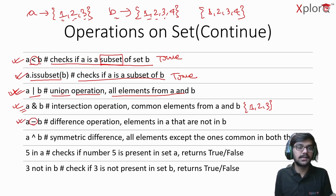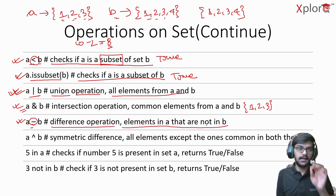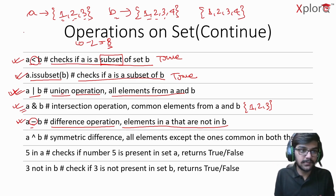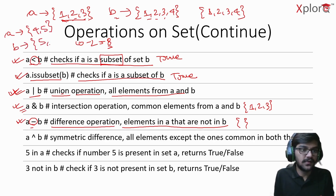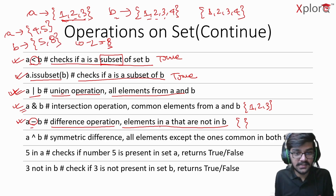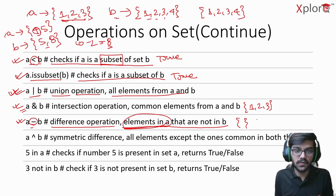The difference operation 'a - b' is not arithmetic subtraction — it gives elements in A that are not in B. For A = {1, 2, 3} and B = {1, 2, 3, 4}, the result is an empty set since all of A's elements are in B. But if A = {4, 5} and B = {5, 8}, then 4 is in A but not B, so the result is {4}.